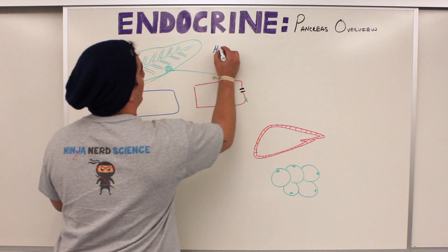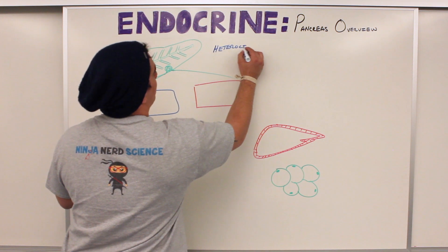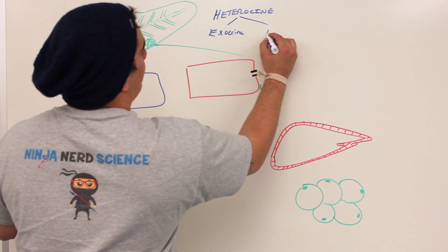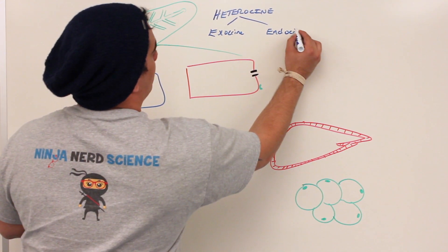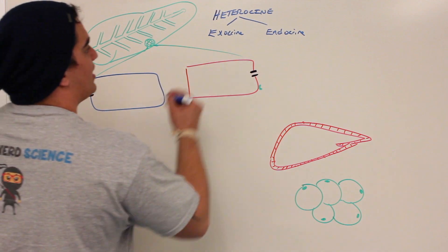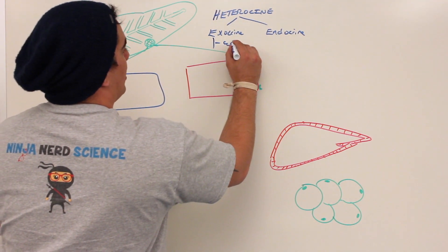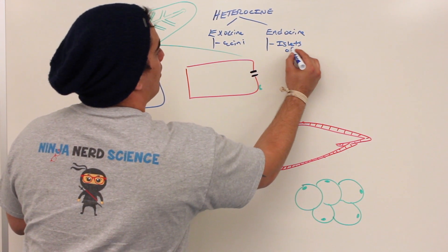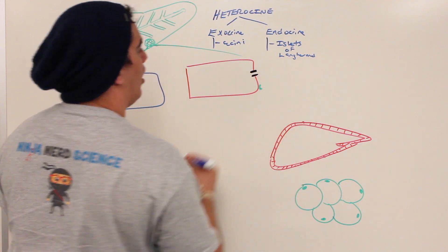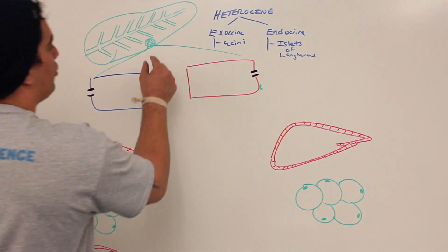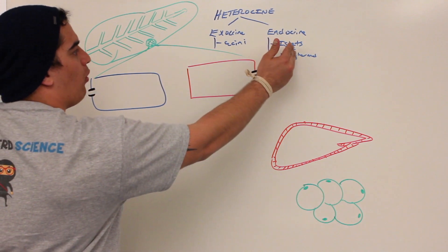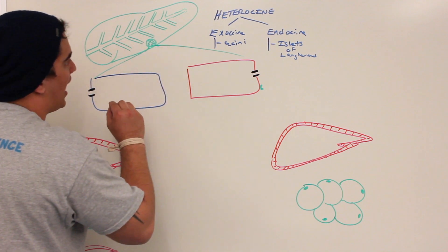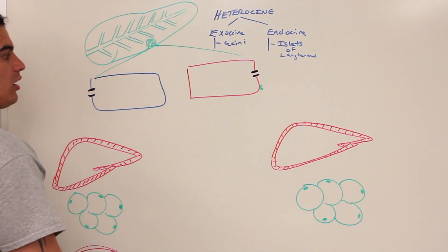Heterocrine means it consists of both exocrine and endocrine portions. The exocrine portion is the acini, and the endocrine portion is the islets of Langerhans. Zooming in on the islet of Langerhans — the acini makes up about 99% of the pancreas, while the islets of Langerhans make up only about 1%. There are two really important cell types within the islets.